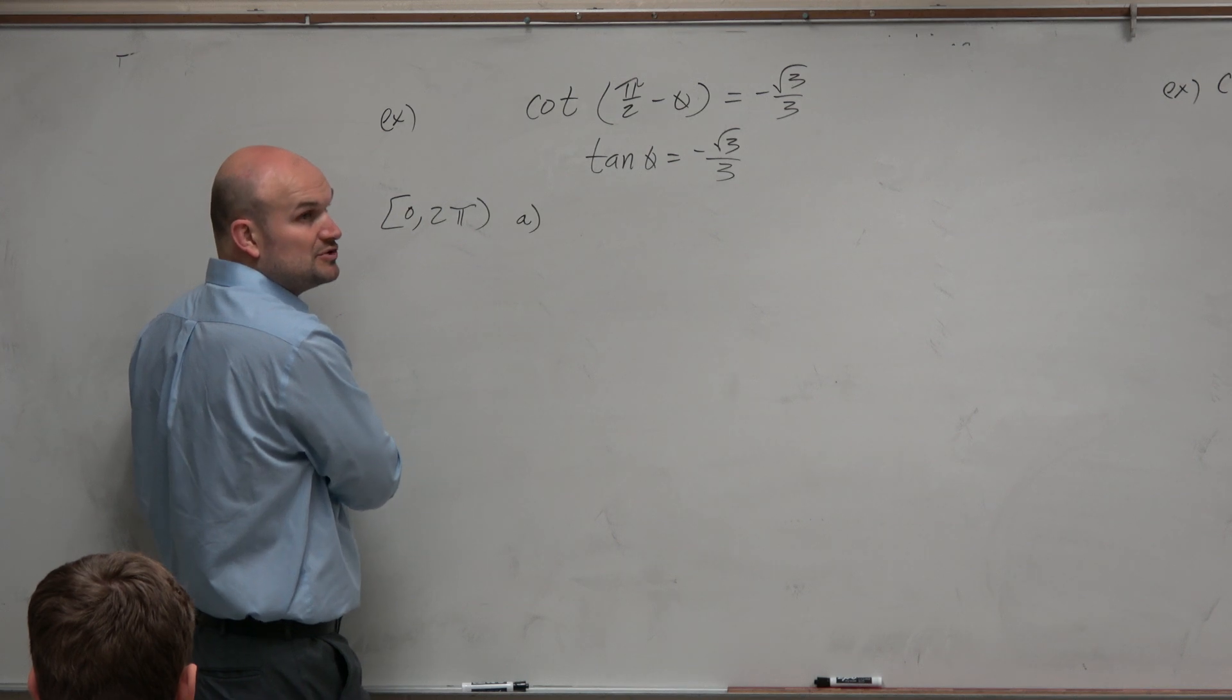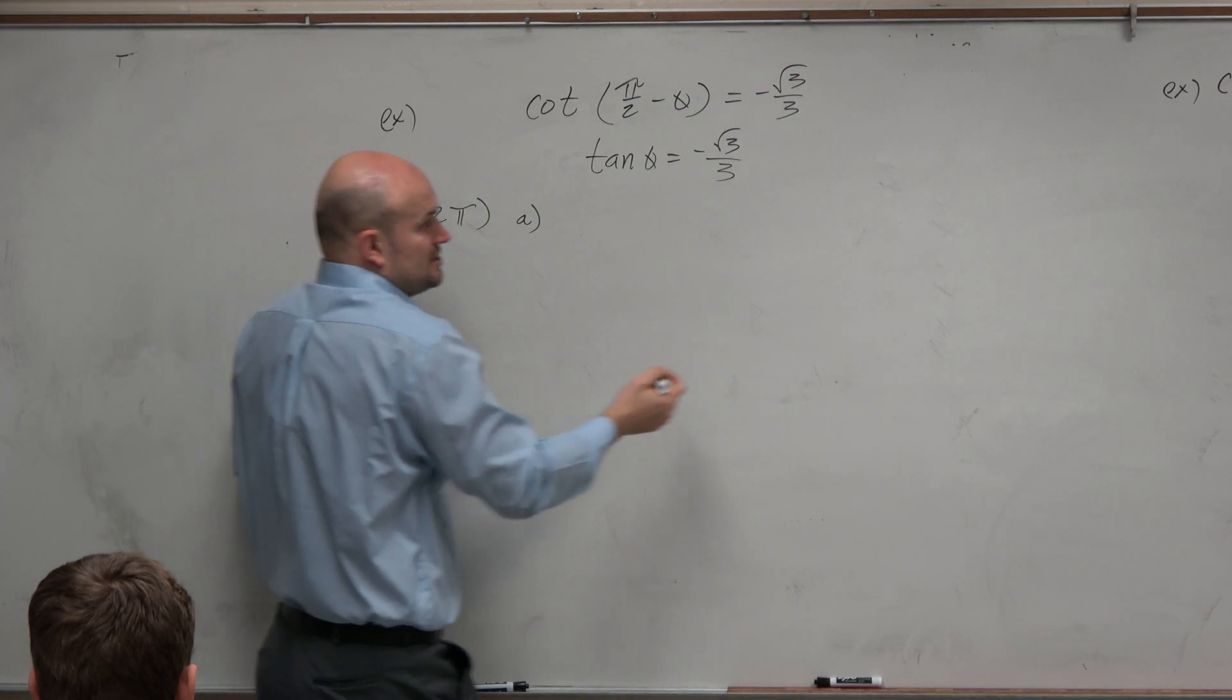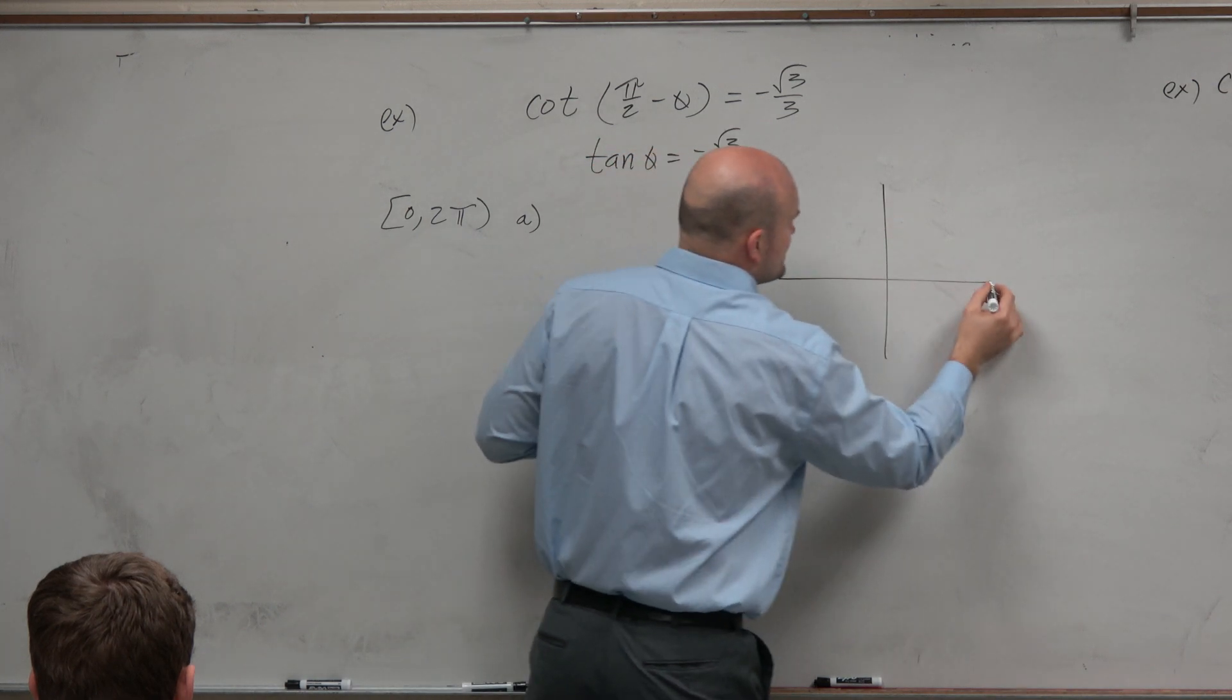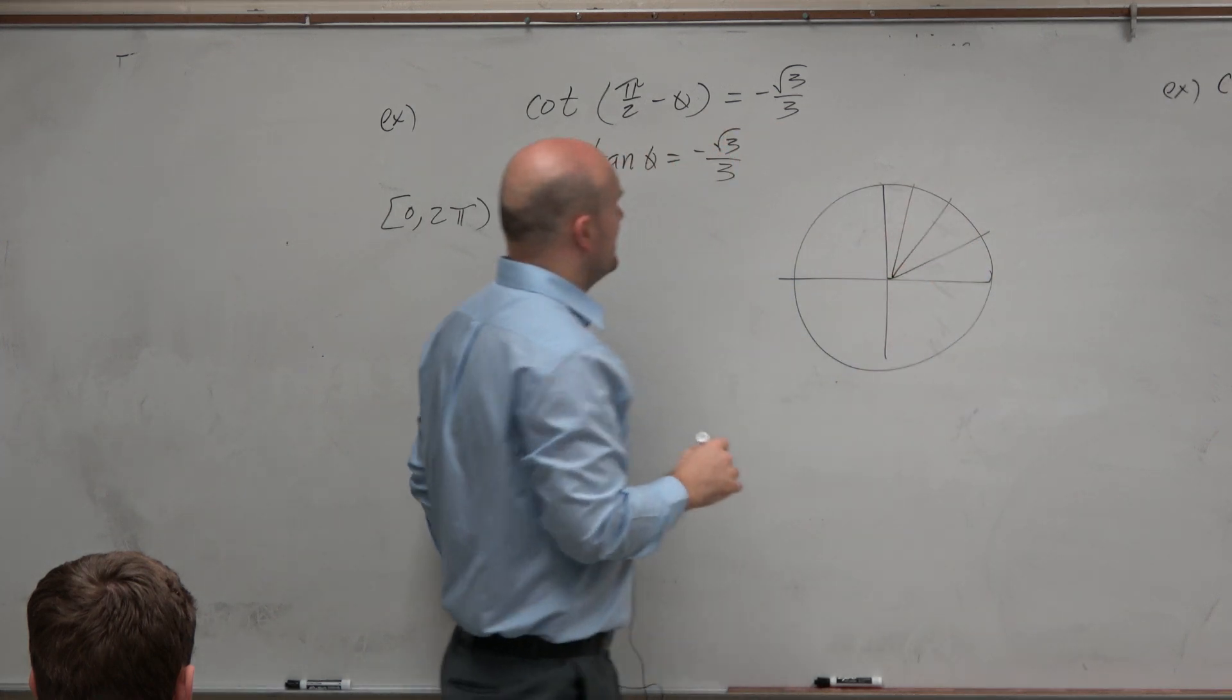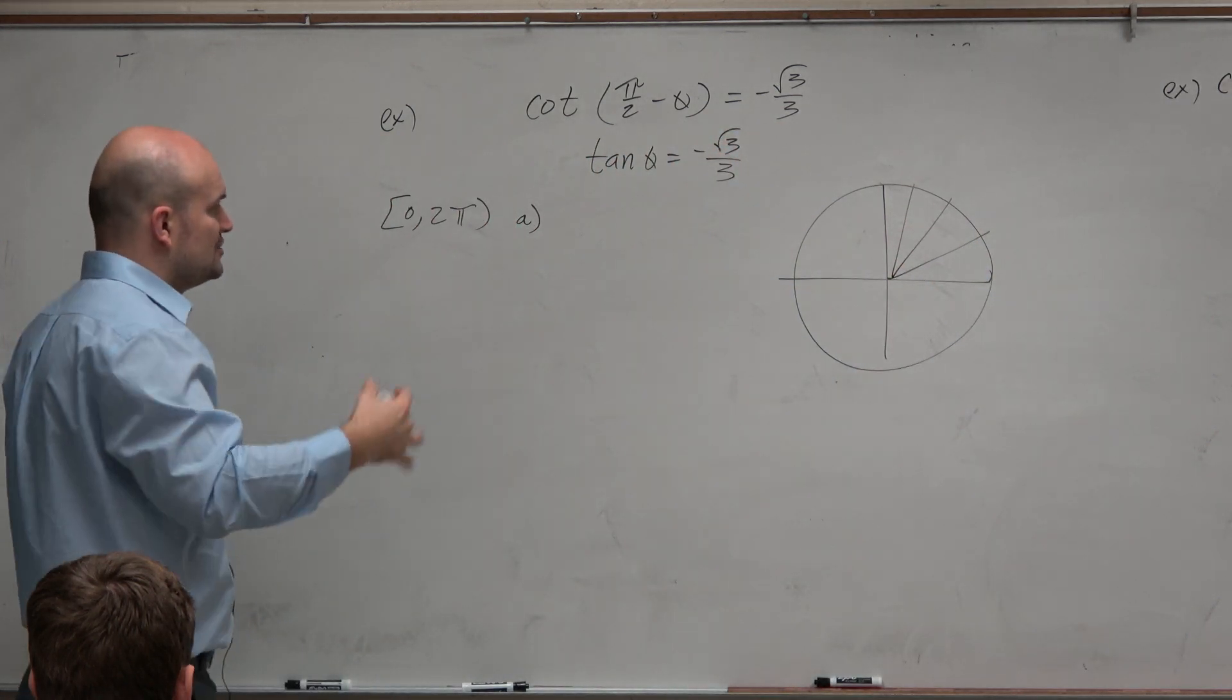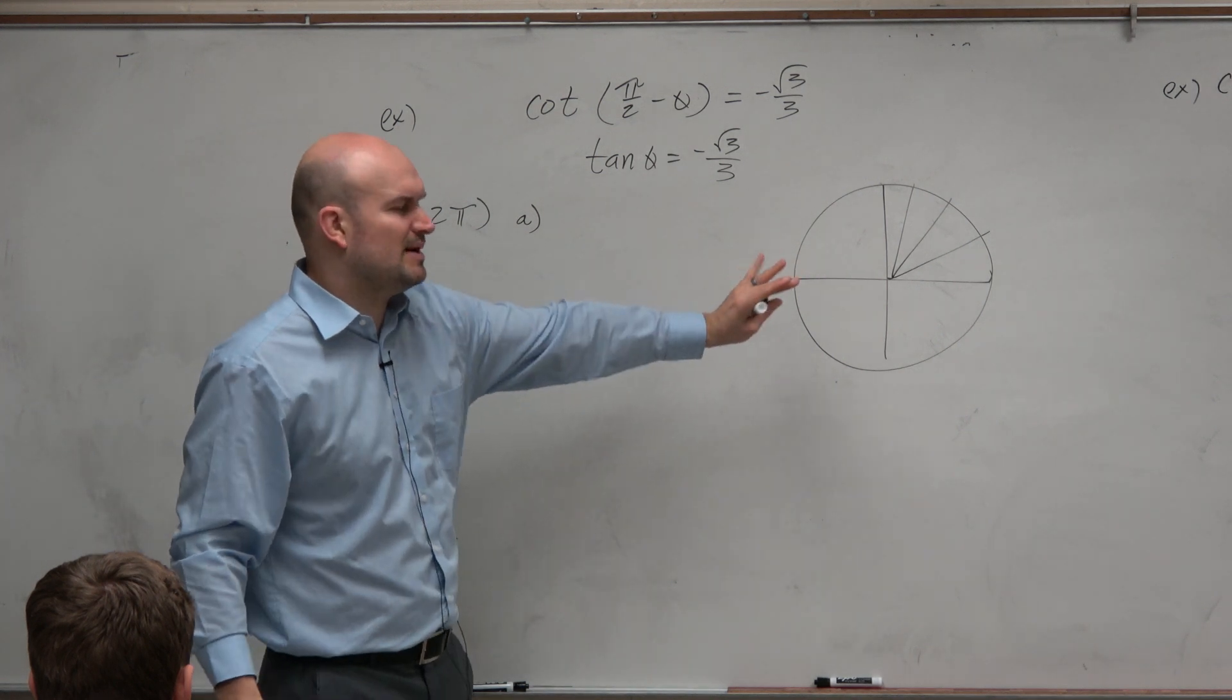Now, if we just want to find between 0 and 2π, that's like the unit circle. So all we really need to know is what are the coordinate points when I take tangent, which if you recall is y over x? When is it when I take y over x do I get square root of 3 over 3? Now, this is negative, but let's just deal with the positive for a second.